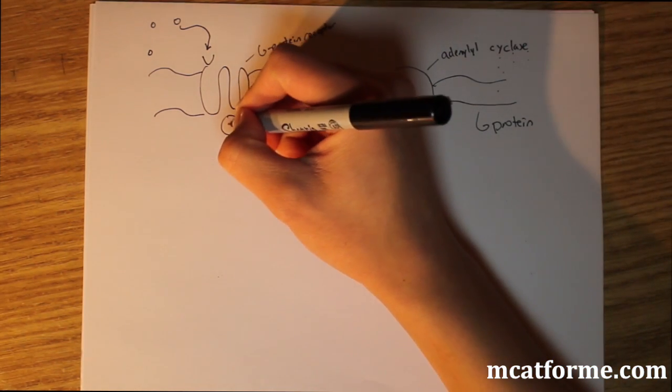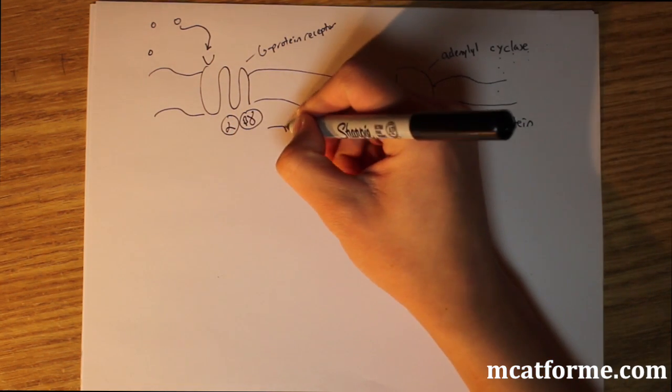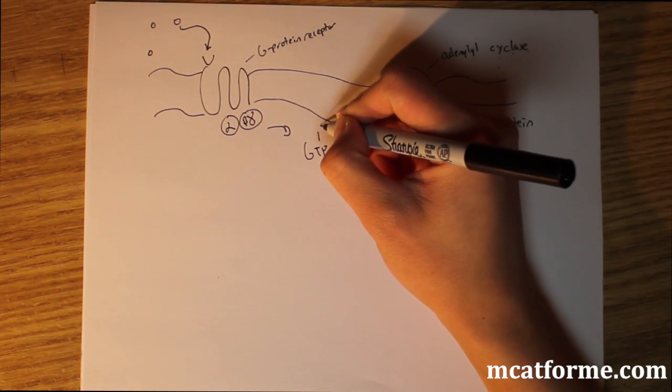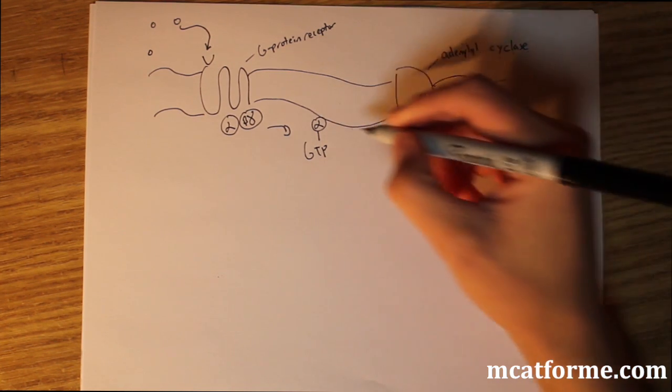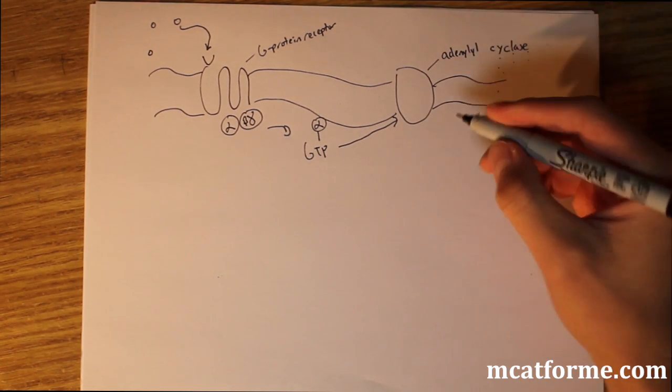What that's going to do is activate this little subunit right here. So now we have this GTP with the alpha subunit, and it's going to come and bind to this adenylyl cyclase.